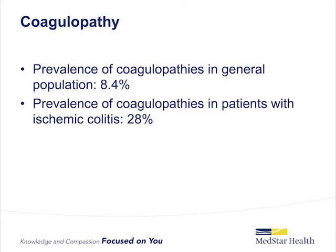Coagulopathy may also predispose patients to ischemic colitis. A study of 18 patients found that 5 of those patients, 28%, were positive for one or more clotting abnormalities, compared to a prevalence of 8.4% in the general population.